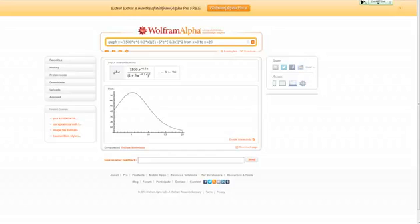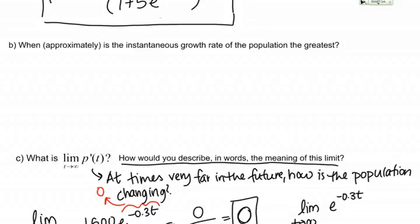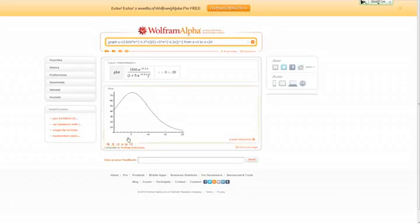Here's the answer to part B. Part B was asking us when approximately the population was changing at the fastest rate. When approximately is the instantaneous growth rate the greatest? We see that approximately 5, somewhere around 5, a little over 5, would be the answer to part B.